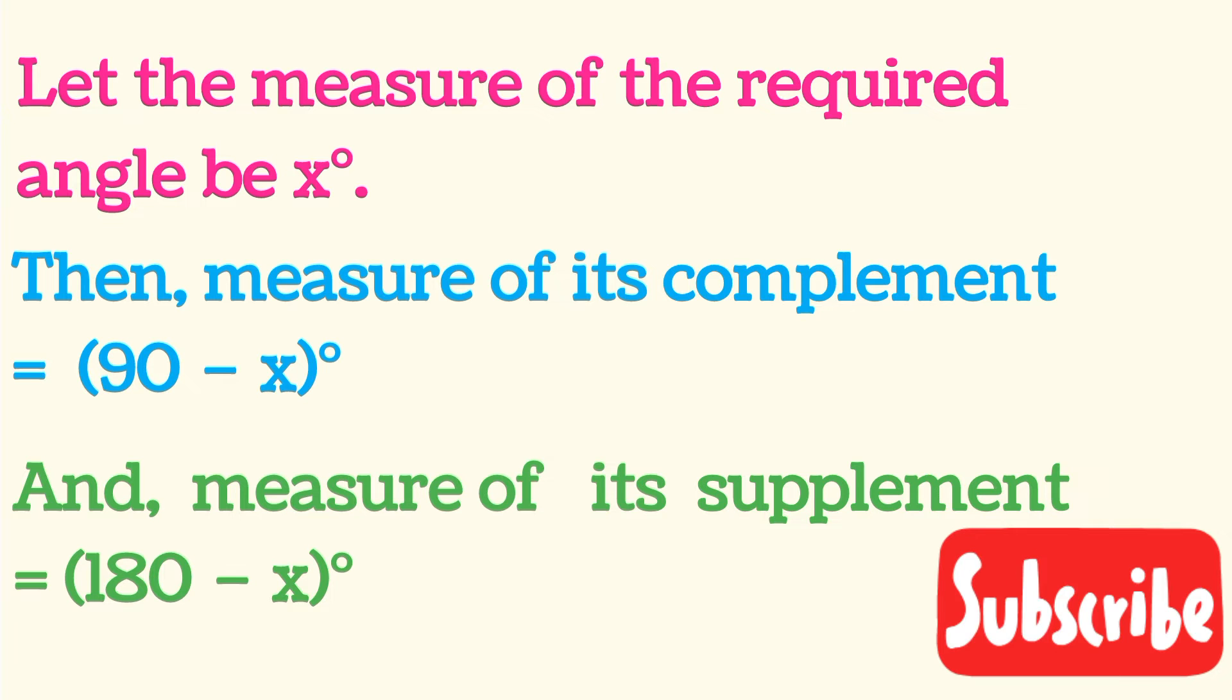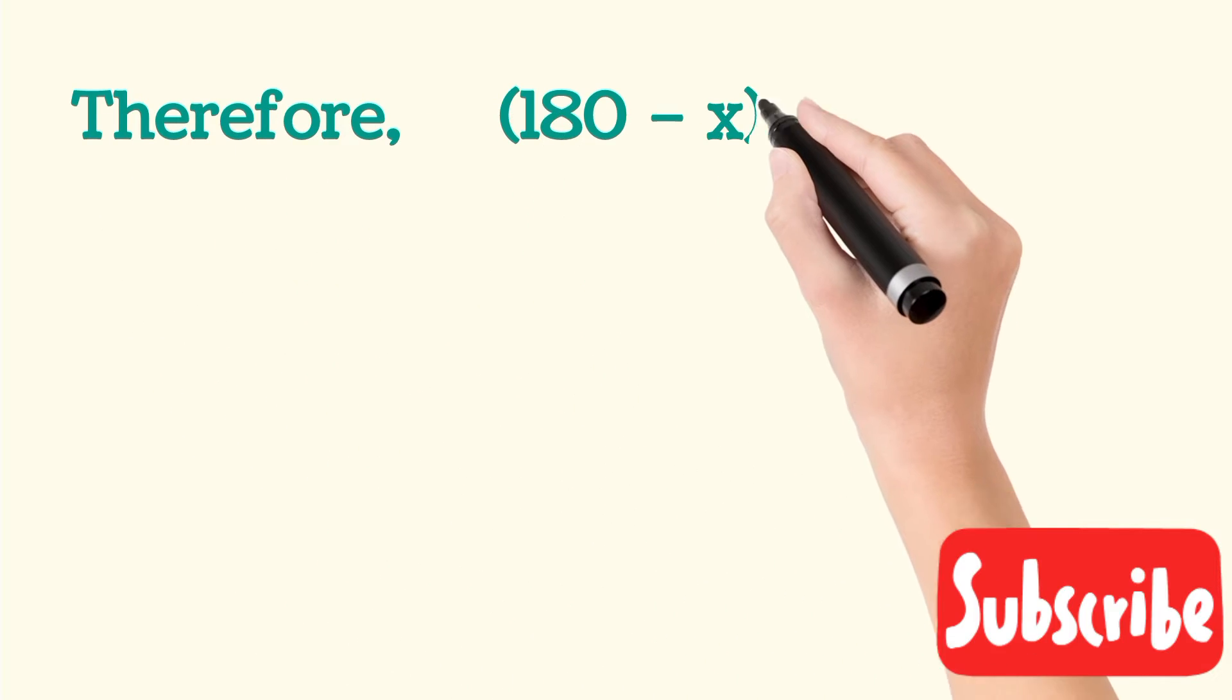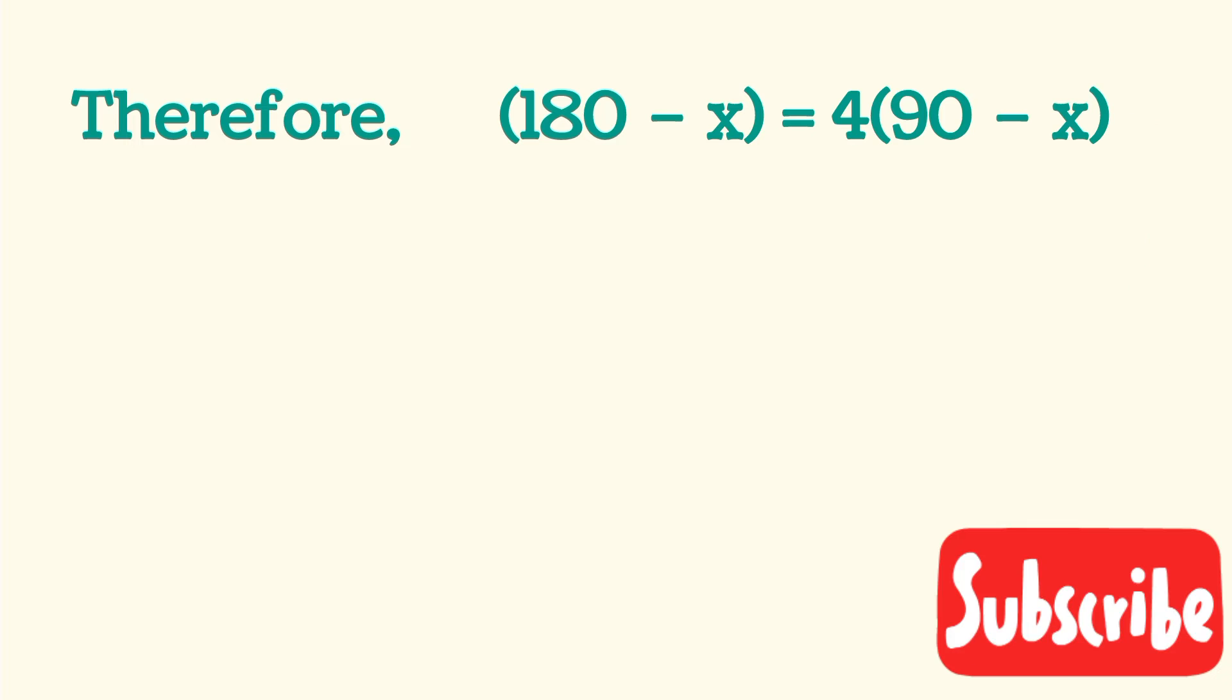Now, it's given in the question that the supplement angle is 4 times the complement angle. So the equation is: (180 - x) = 4(90 - x).